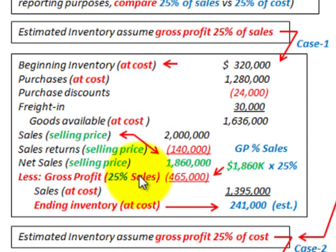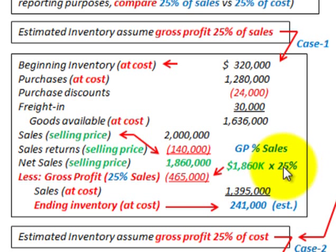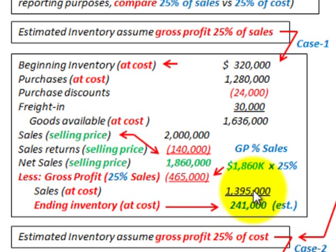For gross profit at 25% of sales, we can go straight to our net sales figure since they're already at the selling price. We take $1,860,000 times 25% to get a gross profit of $465,000. Subtracting that from net sales gives us sales at cost: $1,395,000.